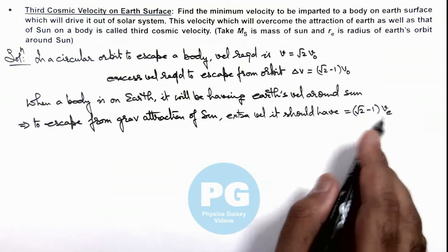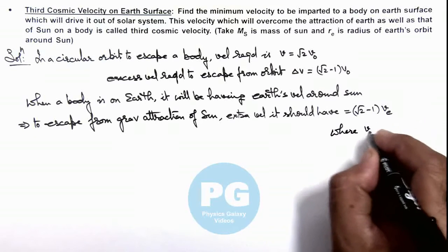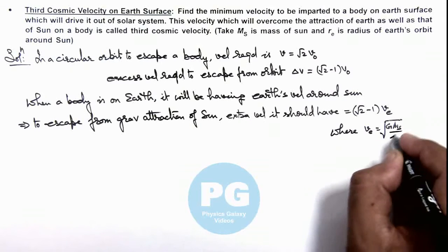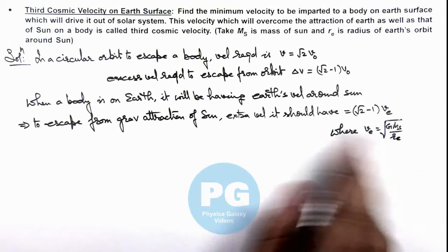Where the value of v_e we know it is root of G M_s over r_e, the velocity with which Earth is orbiting around the Sun.